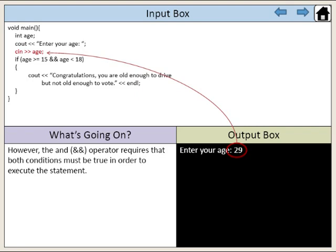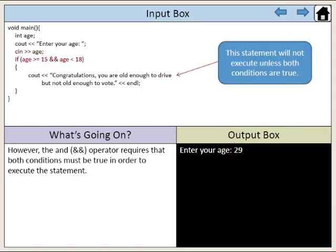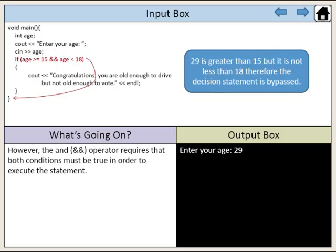Here, the user enters the value 29. 29 is then stored in the variable age. This statement would not execute unless both conditions are true. 29 is greater than 15, but it is not less than 18, therefore the decision statement is bypassed.